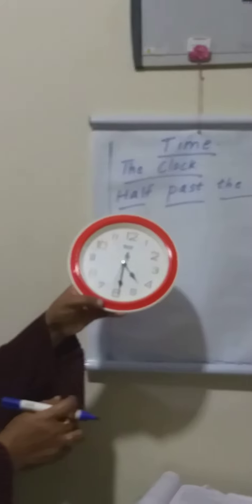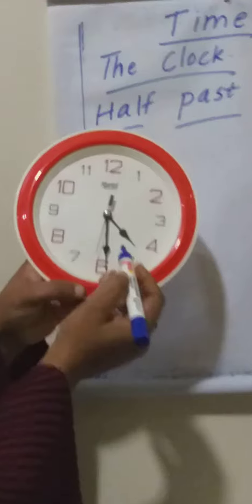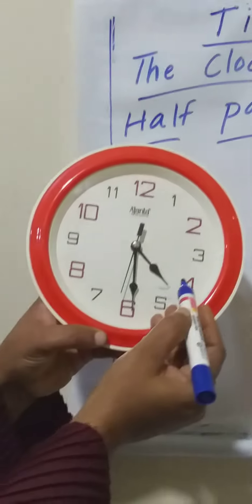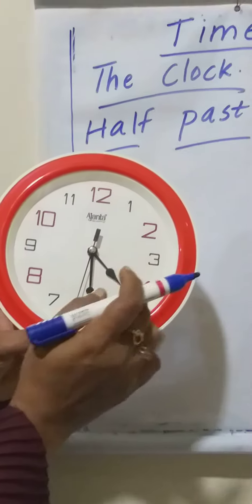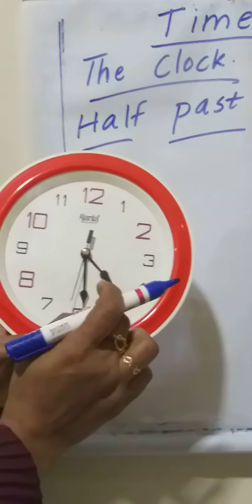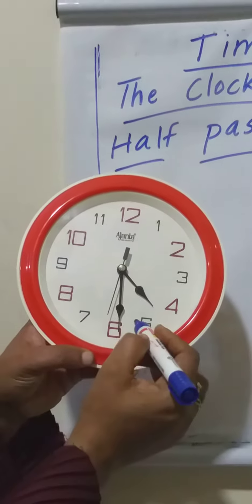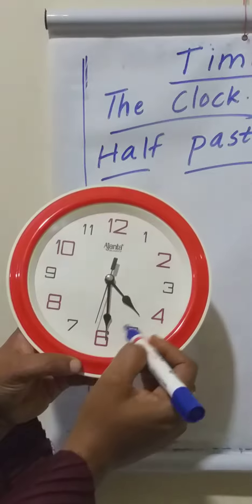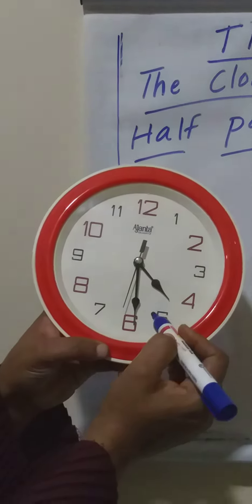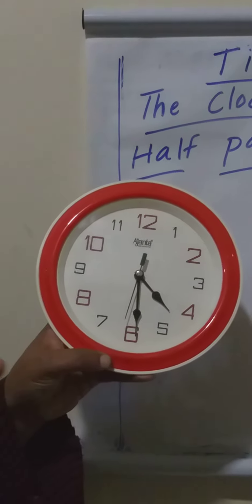You look at this clock. In this clock, our hour hand is where? It has passed 4 and is standing between 5 and 4. So we can guess that